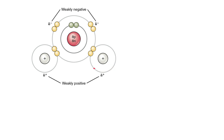What this means is that the molecule becomes polar — that is, it has an uneven distribution of charge. With the electrons more likely to be found around the oxygen atom,